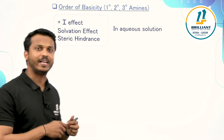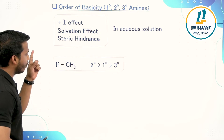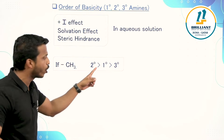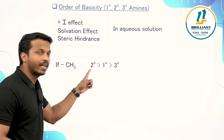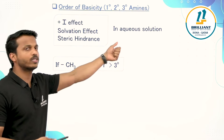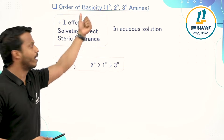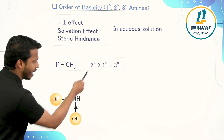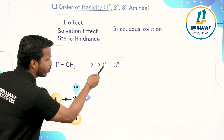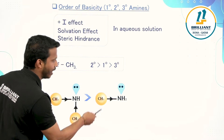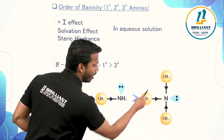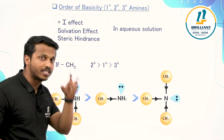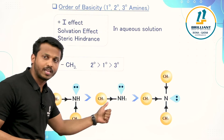In aqueous state, there are two cases to consider based on the alkyl group. If a methyl group (CH3) is present in the amine, the order of basicity is: secondary > primary > tertiary. So for methyl amines, the secondary amine (with NH and two methyl groups) is most basic, followed by the primary amine (NH2 with one methyl group), and tertiary amine (N with three methyl groups) is least basic among them.